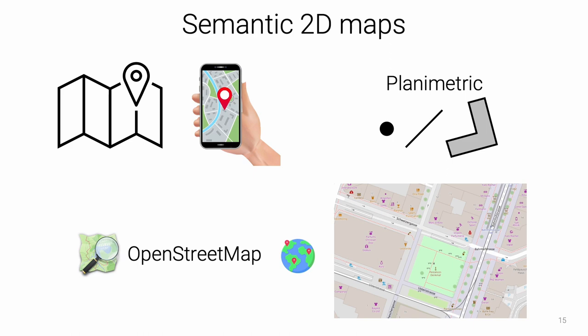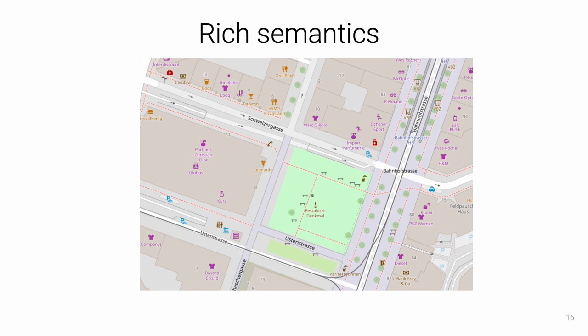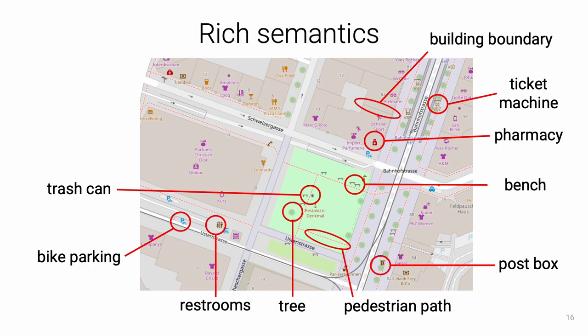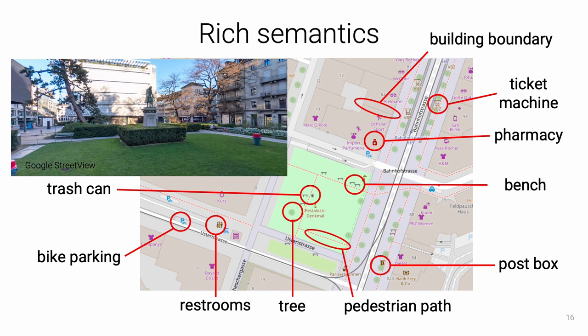Maps from OpenStreetMap are available all around the world for free and are maintained by an active global community. These maps include a wide diversity of objects commonly found in urban areas such as buildings, parks, trees, benches, trash bins, and many others. When lost in such environments, humans can easily orient themselves by matching the 2D maps with a mental map derived from visual observation.